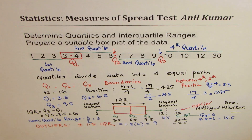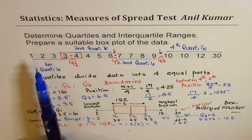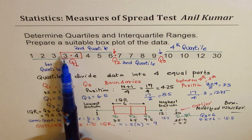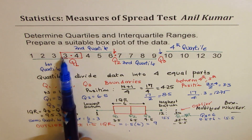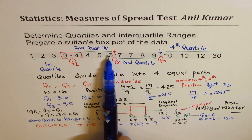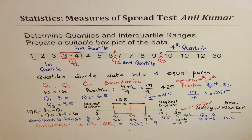So what we have drawn is a modified box and whisker. I hope with this, the concept is clear about quartiles. They divide the whole data into four equal parts — four elements in the first quartile range, four in the second, four in the third, and four in the fourth or upper quartile. Based on this, we have the next question.